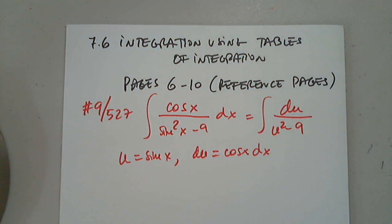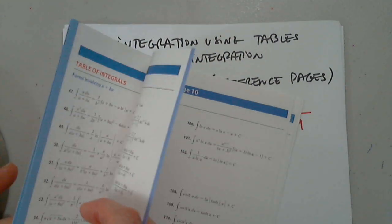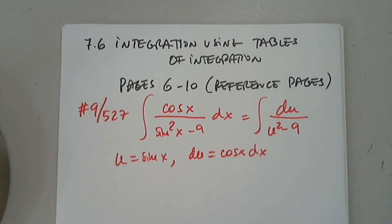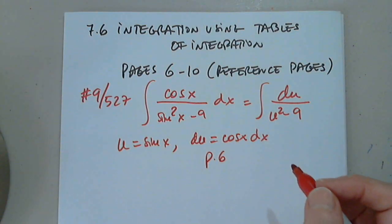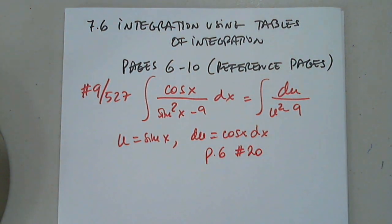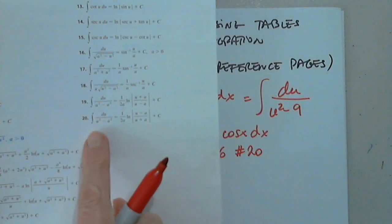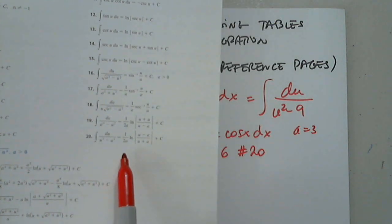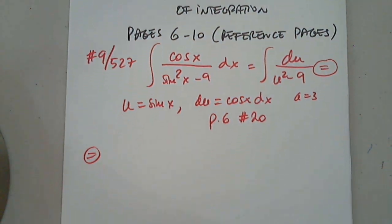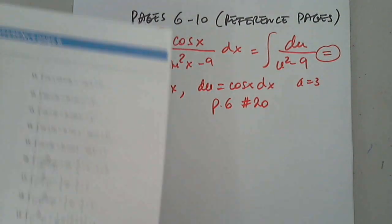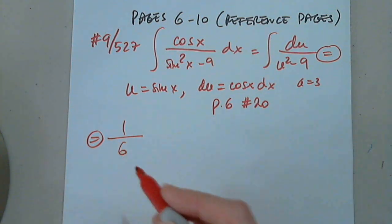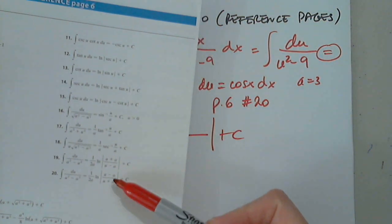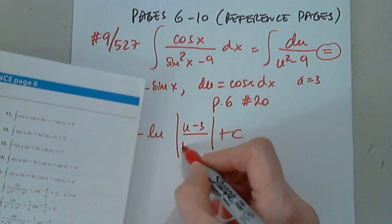On page 6 of the reference pages, we have formula number 20. Formula 20 gives: du over (u² − a²), where a = 3. The result is 1 over (2a) times the natural log of the absolute value of (u − a) over (u + a), which is (1/6) ln |(u − 3)/(u + 3)| plus a constant C.